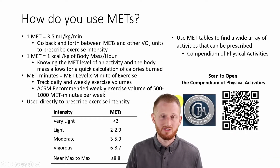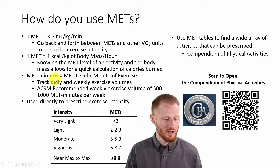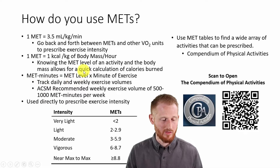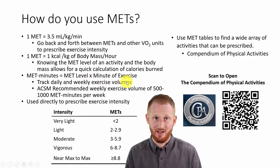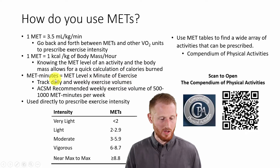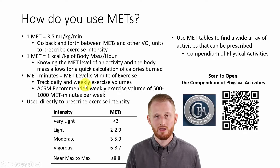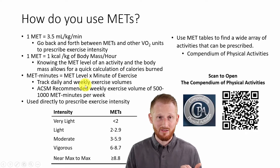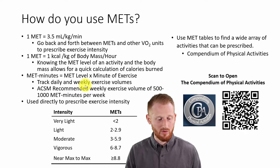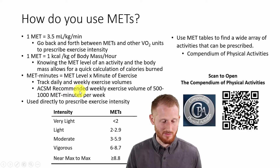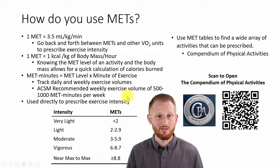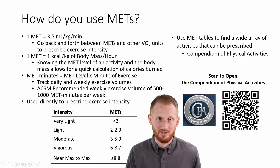Another thing you can do with METs is use them to track exercise volumes using a unit called MET Minutes. MET Minutes is nothing more than the MET intensity level multiplied by the minutes spent doing that exercise at that intensity. You can use this to track exercise volumes for the day, for the workout, or for the week, which is probably the most common usage. The ACSM — the American College of Sports Medicine — recommends that you do between 500 and 1,000 MET Minutes per week in order to get the full health benefits from exercise.